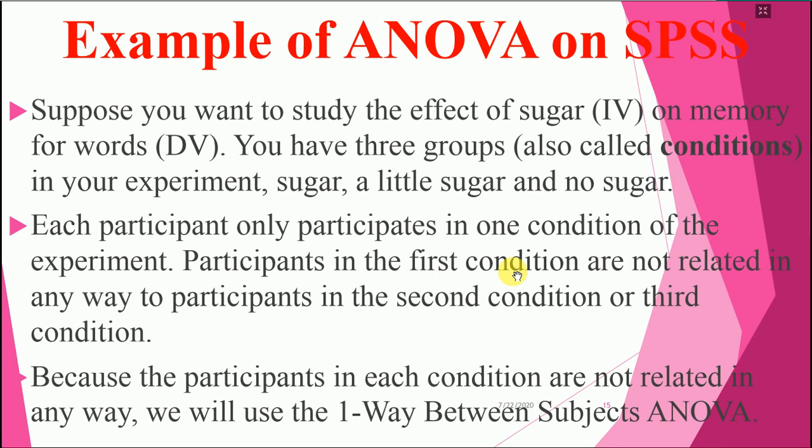For example, you have three groups — also called conditions — in your experiment: sugar, little sugar, and no sugar. You are looking at two things: sugar and memory. Each participant only participates in one condition of the experiment. Participants in the first condition are not related in any way to participants in the second or third condition. Because participants in each condition are not related, we will use the one-way between-subjects ANOVA.